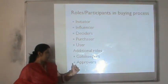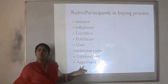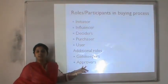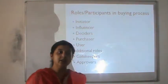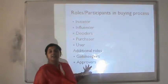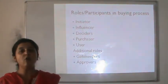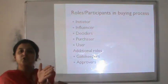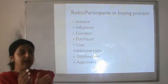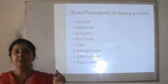Two more roles are gatekeeper and approver. An approver is a person who may or may not be the money payer or actual user, but has authority to approve the final purchase — for example, a parent approving a child's college admission choice. A gatekeeper is a person who has the ability to withhold or ignore certain information, not letting it pass through — for example, an elder sibling who prevents information about a child needing a new bike from reaching the parents.